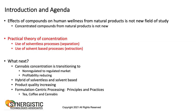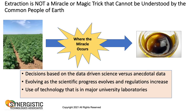So as we move from that, let's look more at the practical theory of concentration—solventless and solvent-based. Somewhere along the way we figured out that extraction is a magical thing: you go from a field, there's a miracle, and then there's oil. There are a lot of different choices for how to do the extraction, but the decisions really have to be data-driven, scientific process-oriented, and account for regulatory increases and the use of technology that's in major universities.